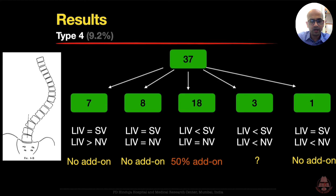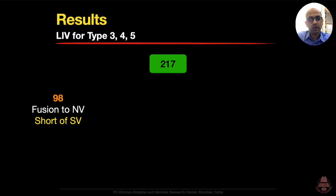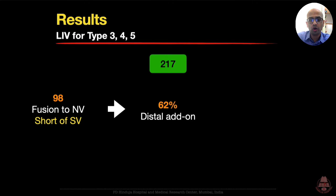This was the first classification to bring attention to this special curve pattern where fusion typically had to go distally into the lumbar spine. For Type 5, the double thoracic type with a structural proximal thoracic curve: stopping at the stable vertebra had no distal add-on, but stopping short meant 7 out of 10 patients had a distal add-on and one required revision. Overall, of 217 patients from Types 3, 4, and 5 where LIV was fused to the neutral vertebra and stopped short of the stable vertebra, 62% had a distal add-on. Two patients required revision surgery.